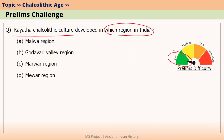You have four options here: Malwa region, Godavari valley region, Marwad region, and Mewad region. If you know the answer to this question, please answer it in the comment section.